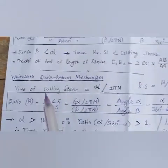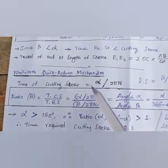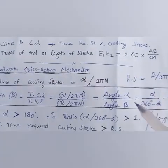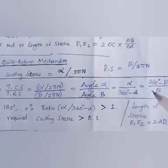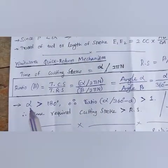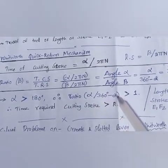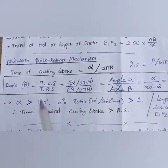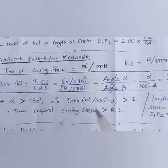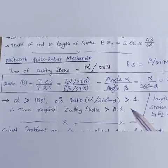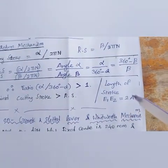For the Whitworth quick return mechanism: time of cutting stroke equals alpha divided by 2πN, return stroke equals beta divided by 2πN, and the ratio is alpha divided by beta, or alpha divided by (360° minus alpha). Since alpha is greater than 180°, the ratio is always greater than 1, meaning the cutting stroke always takes longer than the return stroke. The length of stroke equals E1E2 = 2 × AB.